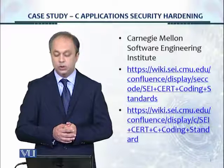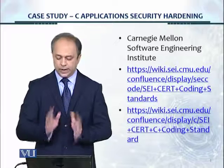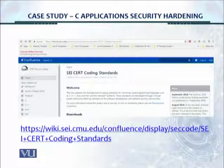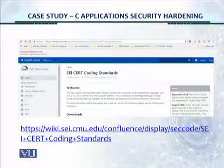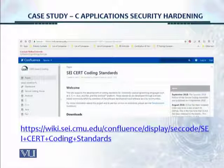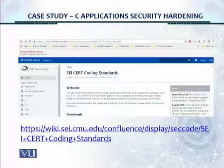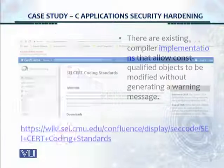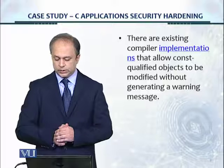Let's look at the controls for C applications suggested by the Carnegie Mellon Software Engineering Institute. This is what the portal looks like — the URL is at the bottom of the screen. There are controls here for Android, C, C++, Java, and Perl — about five or six different technology platforms — with a lot of great documentation available.